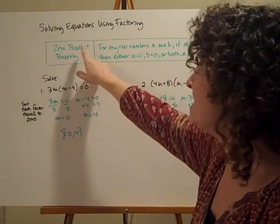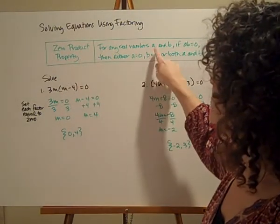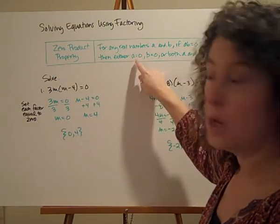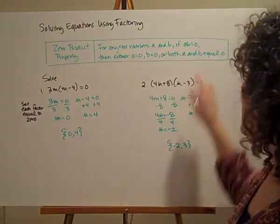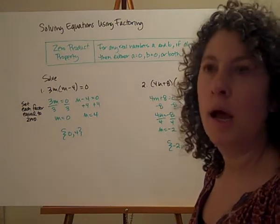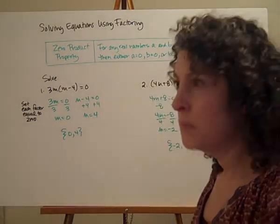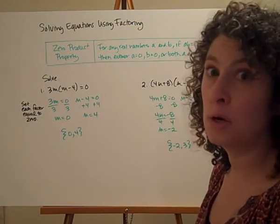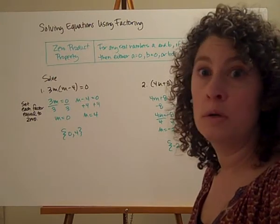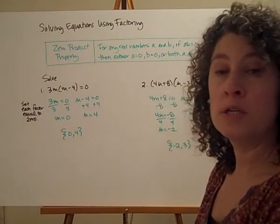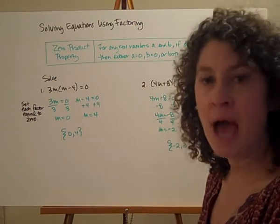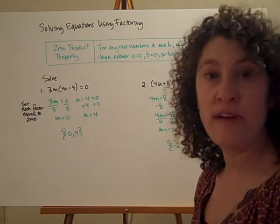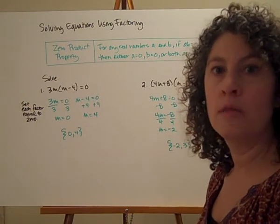The property we're going to be using is called the zero product property. For any real numbers a and b, if a times b equals zero, then either a equals zero or b equals zero, or both a and b equal zero. If I say to you that five times a number is zero, you know that other number has to be zero. In order to get zero as a product, at least one of the numbers has to be zero. We're going to use that along with factoring to solve equations that have more than one solution.